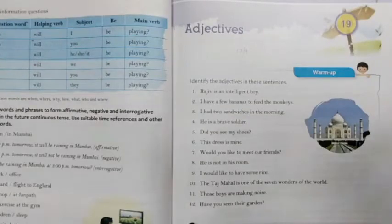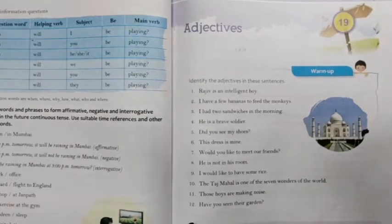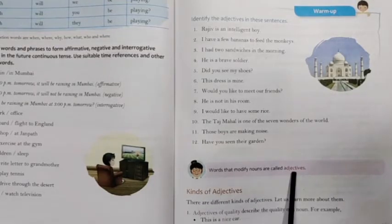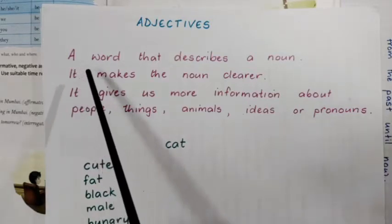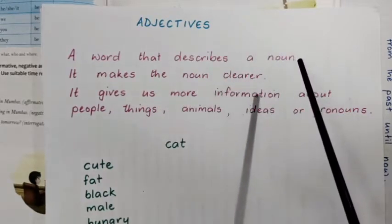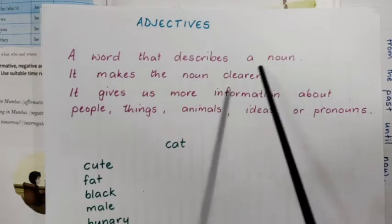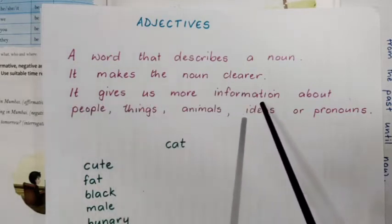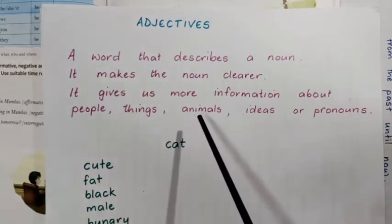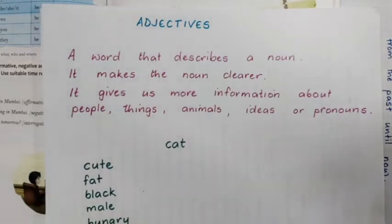Hello class 5, today we are going to talk about adjectives. Adjectives is chapter 19 and it's on page 89. If you want, you can follow in your textbooks. Words that modify nouns are called adjectives. An adjective is a word that describes a noun — it clarifies a noun, makes it clearer, and gives us more information about people, things, animals, ideas, or pronouns.